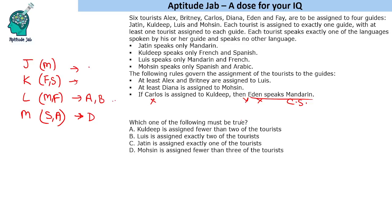Let us evaluate option by option. The first option says Kuldeep is assigned fewer than two tourists. We can assign two people to Kuldeep — there are six tourists, and we can have two here and still satisfy all constraints. So this is not necessarily true; assigning two people to Kuldeep negates this statement.